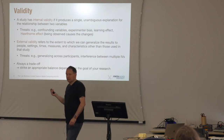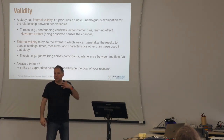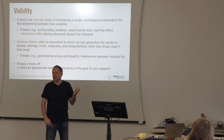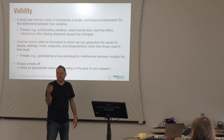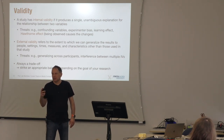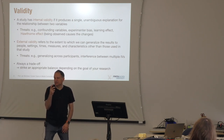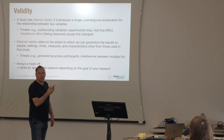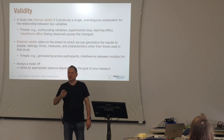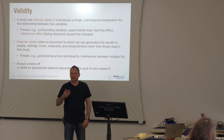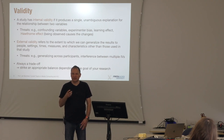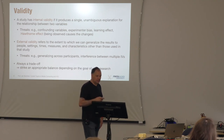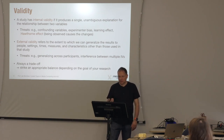In mobile HCI research, for example, the community has agreed that studies about input techniques on mobile devices are no longer acceptable if they only study people sitting down. Since people actually stand, walk around, and are distracted, studies must now include walking and standing conditions. This is an example of the community trying to make results more ecologically or externally valid. You might start with a controlled lab study to prove a technique works, then follow up with a more ecologically valid study.